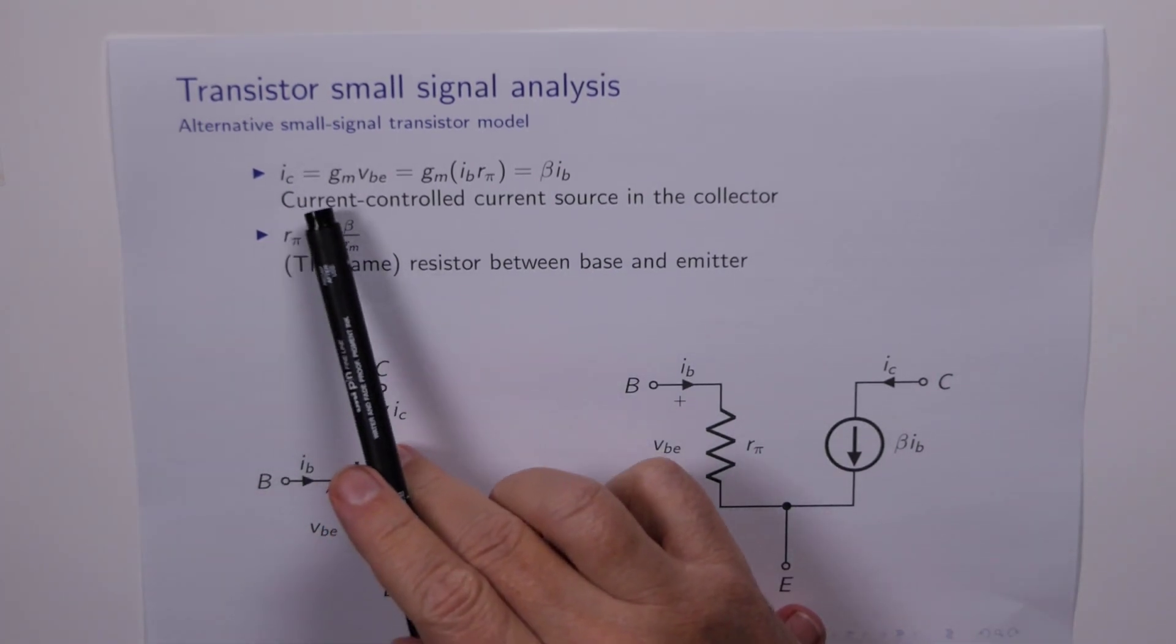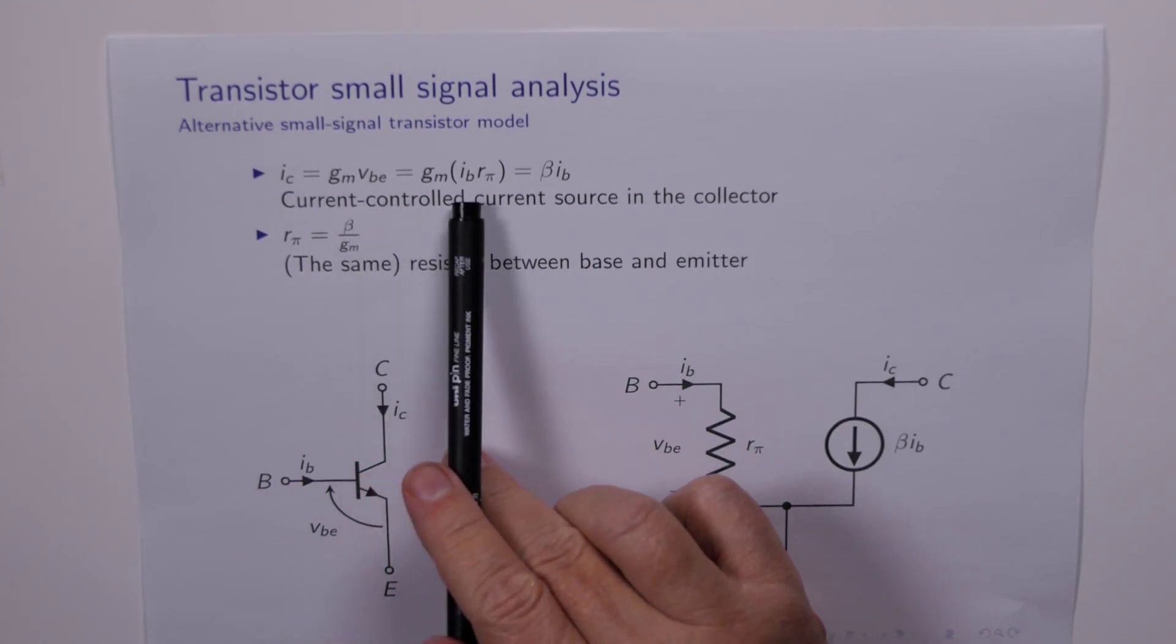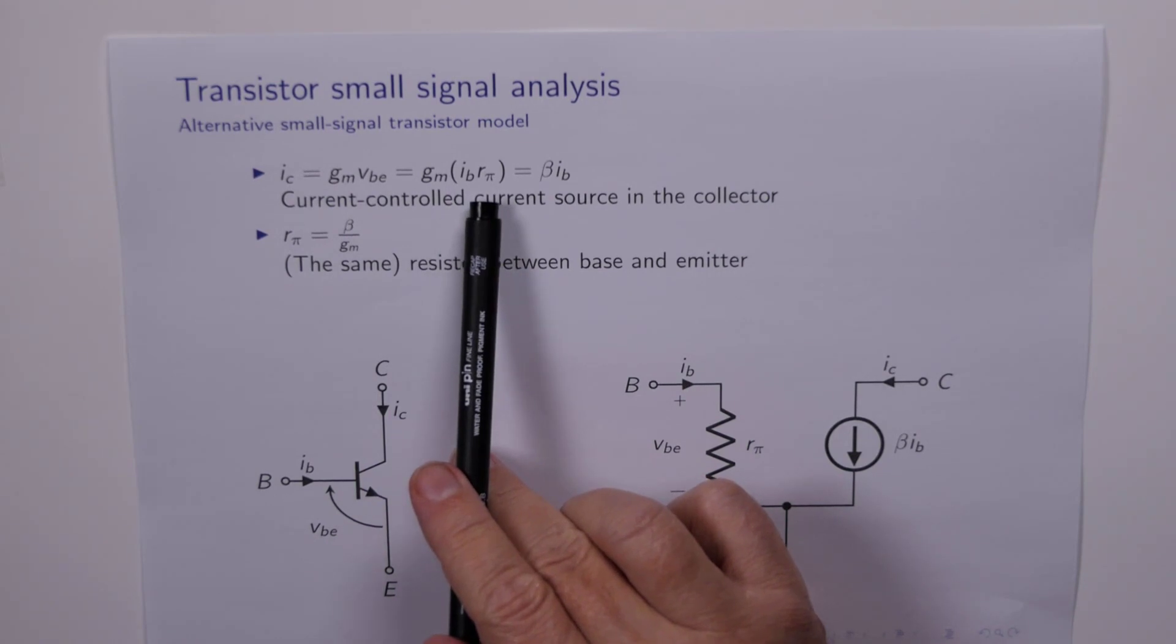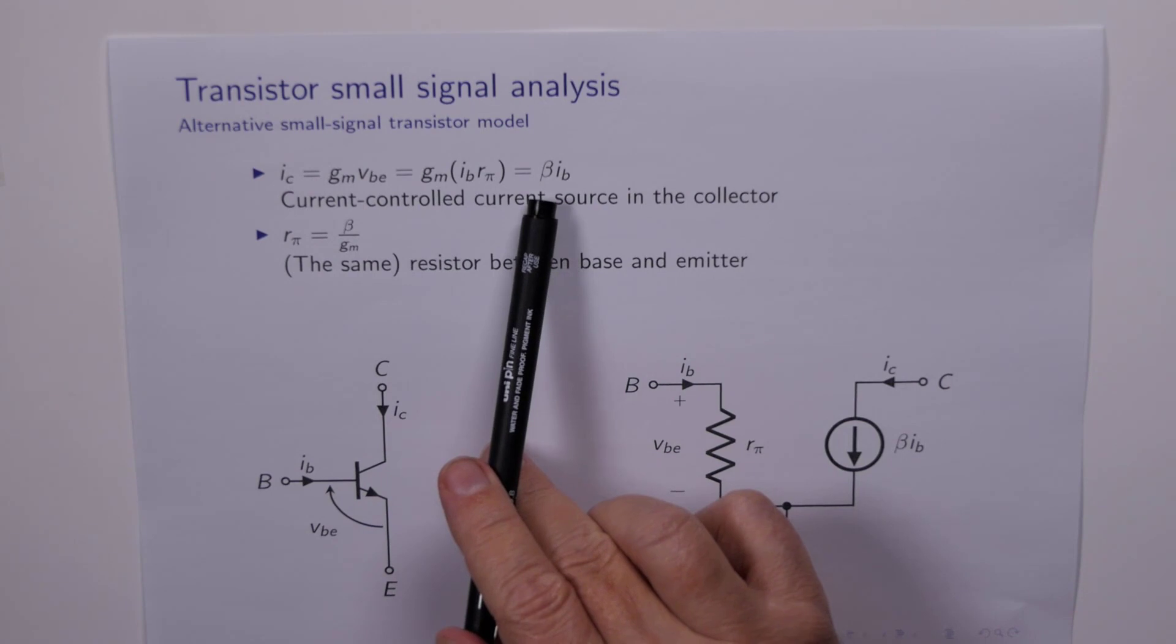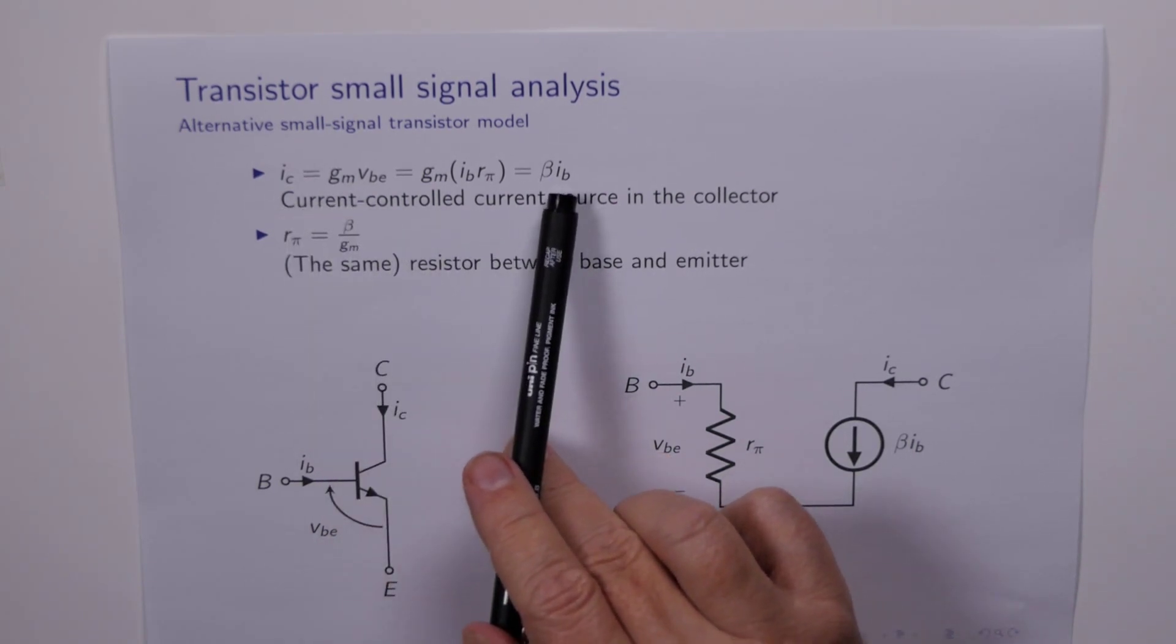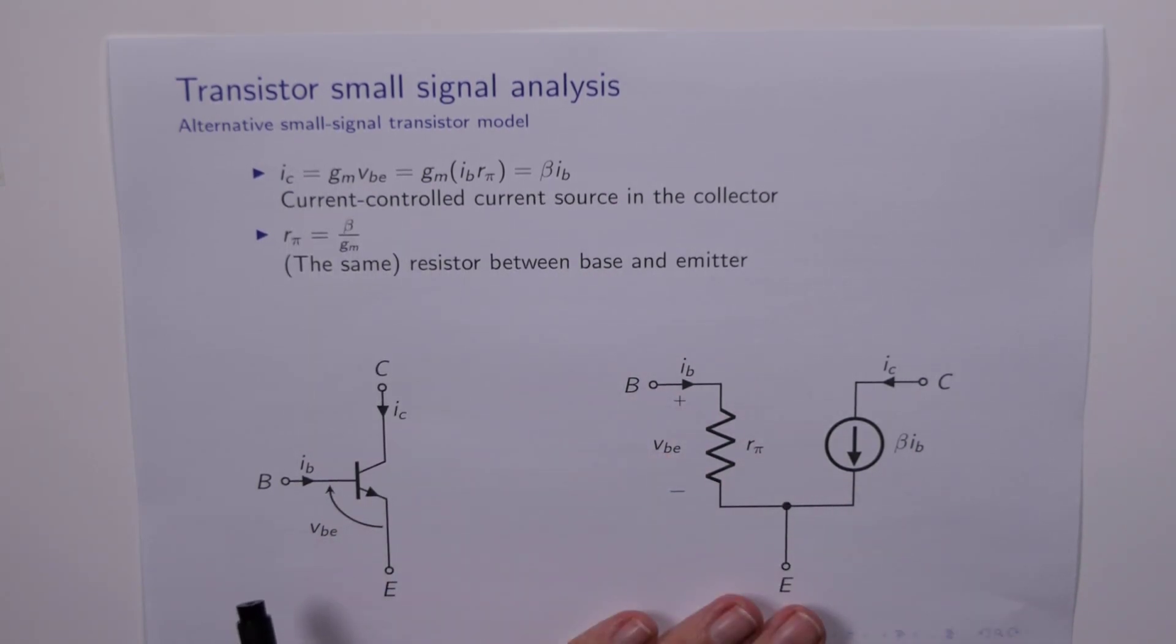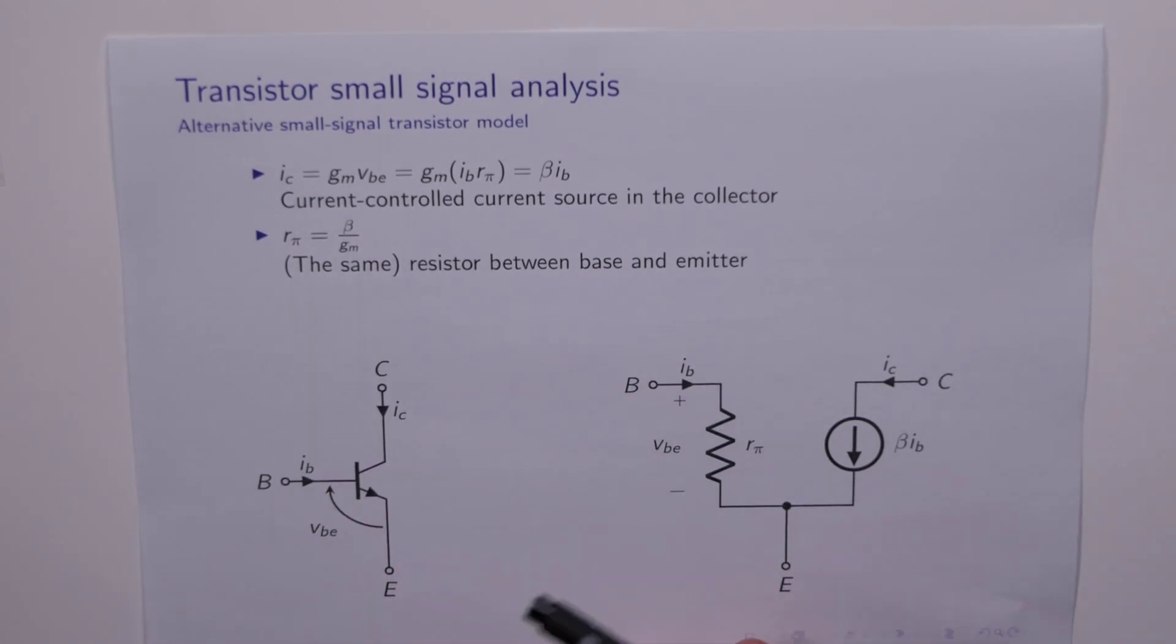So the collector current is equal to the transconductance times VBE, but VBE is equal to the base current times R pi. But GM times R pi is just equal to beta, so we could exchange our voltage controlled current source for a current controlled current source. There's nothing we can do with R pi, so that stays the same. So we can replace GMVBE down here with beta times IB.